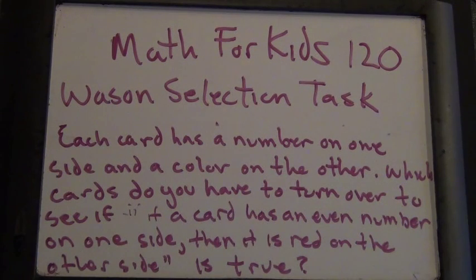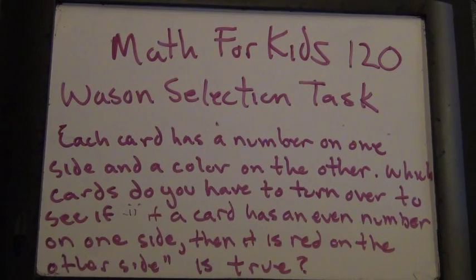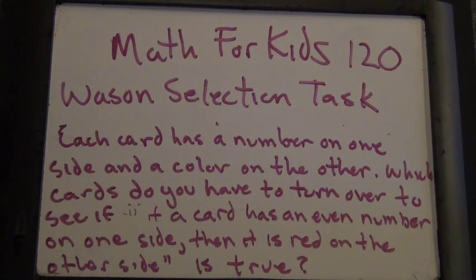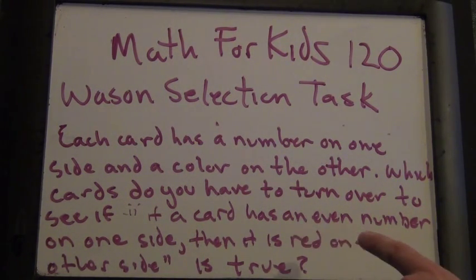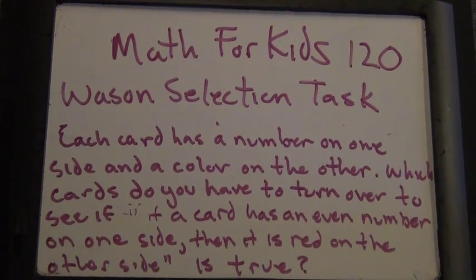So for Math for Kids today, we're going to do something called the Wason Selection Task. This is a really neat problem. I actually didn't know it had a name, but I looked on the internet and it did have a name. So we're going to do something with some cards. Here's the problem: each card has a number on one side and a color on the other side. Which cards do you have to turn over to see if this statement is true — if a card has an even number on one side, then it is red on the other side?